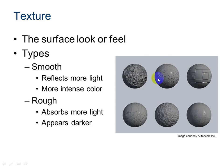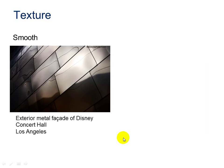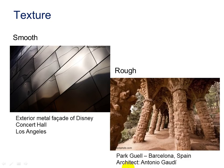Smooth tends to reflect more light — as we can see in these two pictures, there is some reflection, and it is more intense in color with a deeper color. Rough tends to absorb more light — this looks rough, this looks rough, a little bit rough, and they appear to be darker. Here's an example of smooth texture on the exterior facade of Disney's Concert Hall in Los Angeles, versus a rough texture as shown from a structure in Barcelona, Spain.